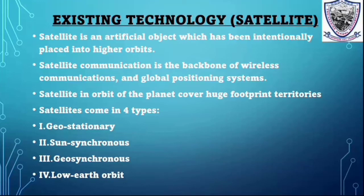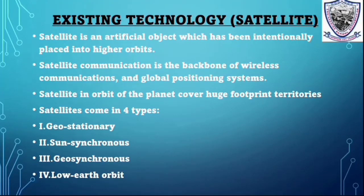Existing Technology: A satellite is an artificial object which has been intentionally placed into higher orbits. Satellite communication is the backbone of wireless communications and global positioning systems. Satellites in orbit of the planet cover huge footprints of territories. Satellites come in four types: geostationary satellite, sun-synchronized satellite, geosynchronized satellite, and low-earth orbit satellite.